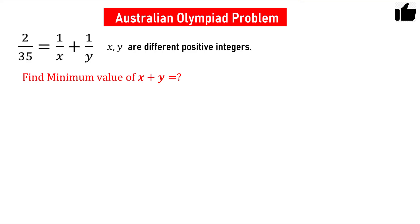Hello friends. In this problem you have to find the minimum value of x plus y. The condition given is 2 divided by 35 equals 1/x plus 1/y. It is also given that x and y are different positive integers — that is, x is not equal to y, and both are positive integers.